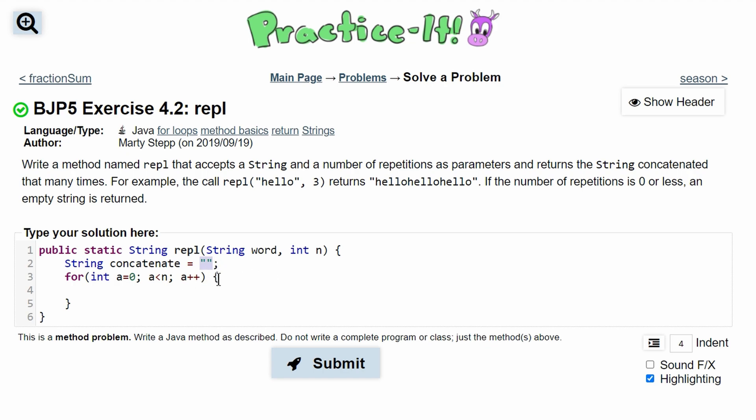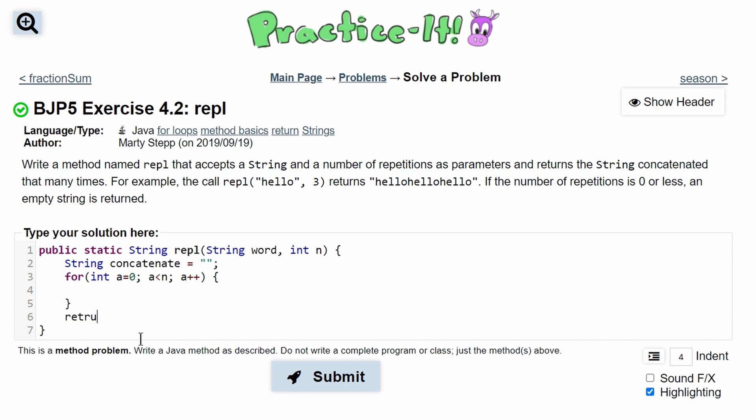With these two double quotes, if we never enter this for loop—so if our number of repetitions is 0 or less—we're not going to be in this for loop, because it has to run as long as n is greater than a. If a starts at 0, that means n has to be greater than 0 to enter the loop. Otherwise, we'll just return our concatenated string with nothing inside, which means it will be empty.